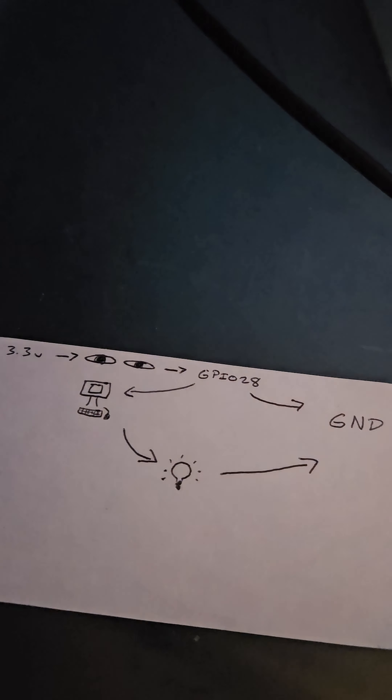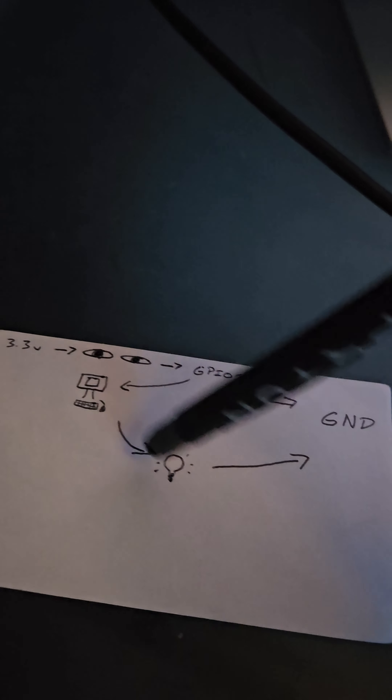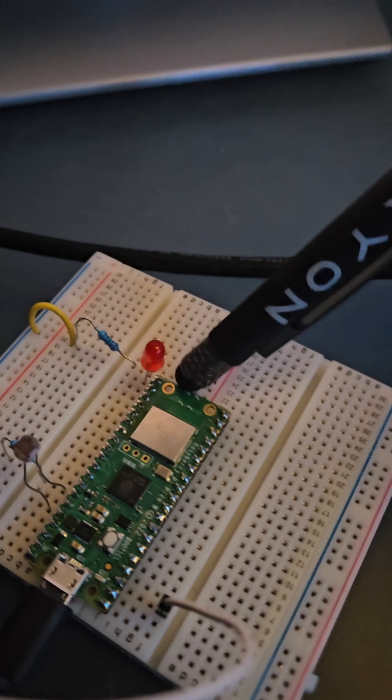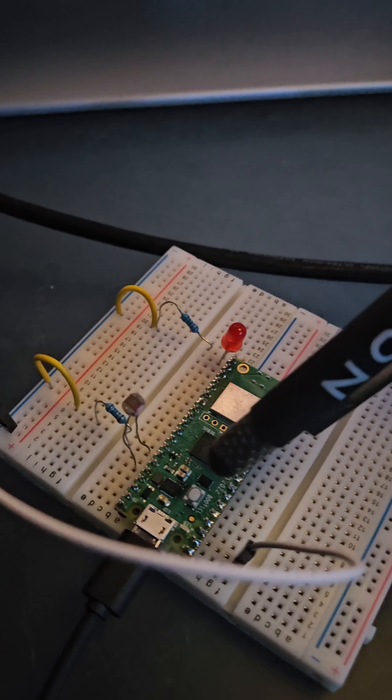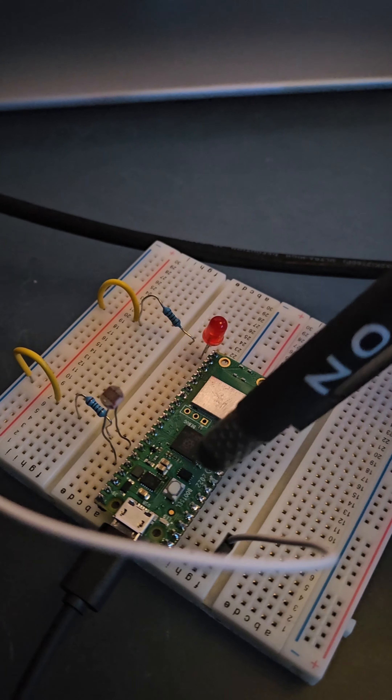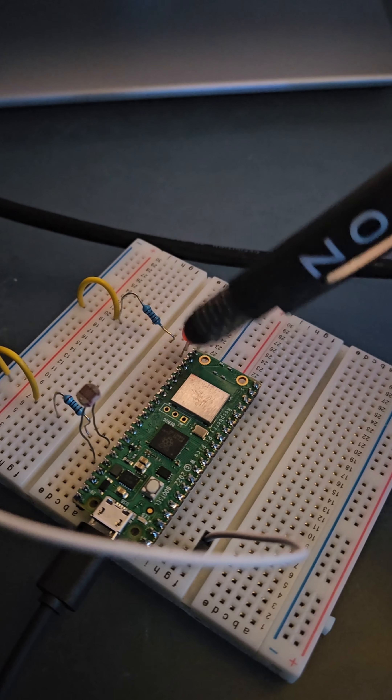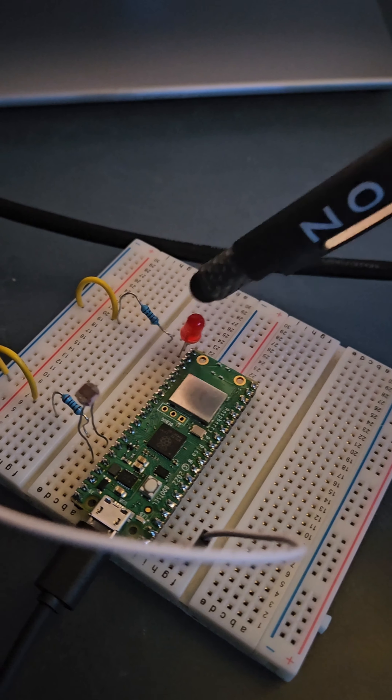After the computer receives how much power it's getting and knows how bright the environment is, it's going to send that information and change the brightness on the LED. The electricity travels in that forward motion again — it comes into the computer, spits out into the LED, changes the brightness, and then goes back into ground.